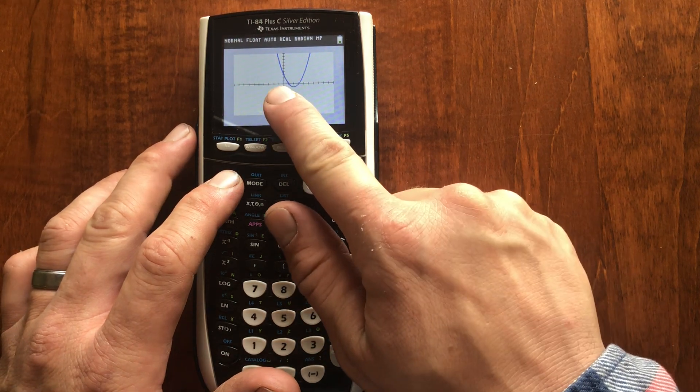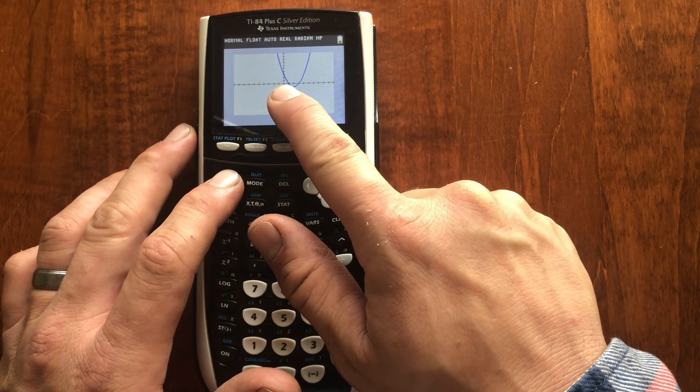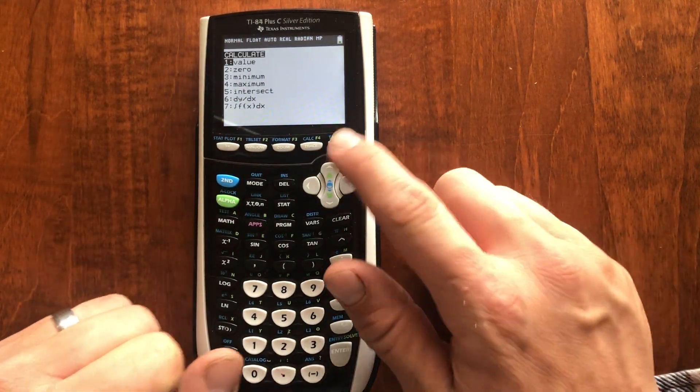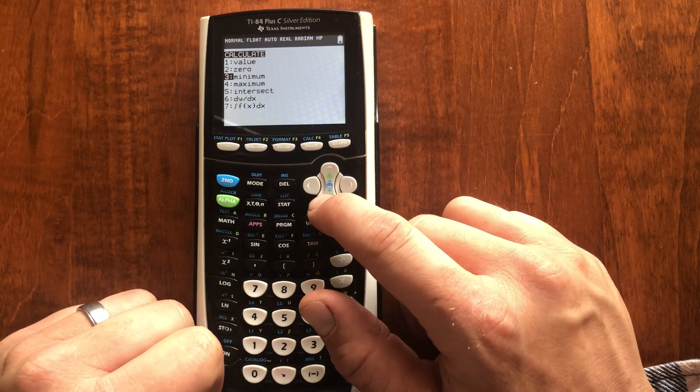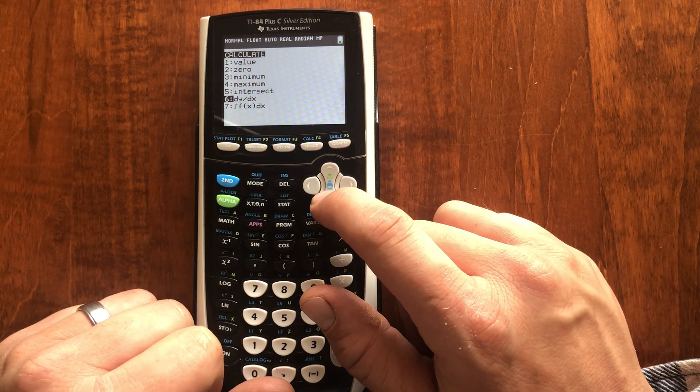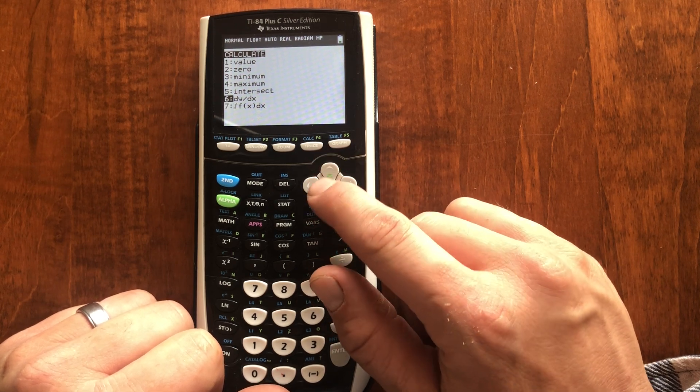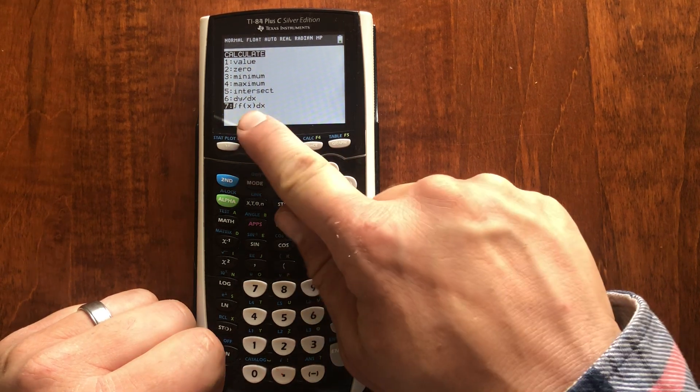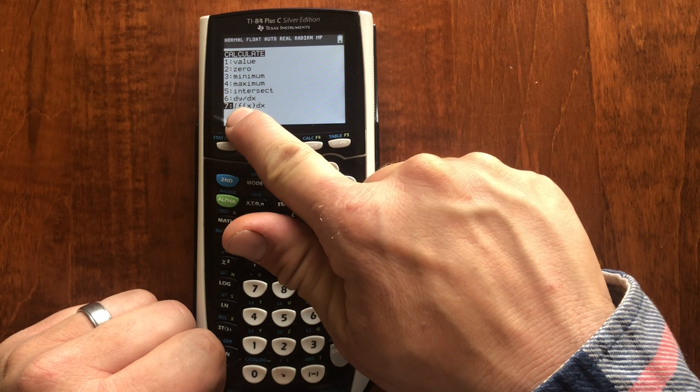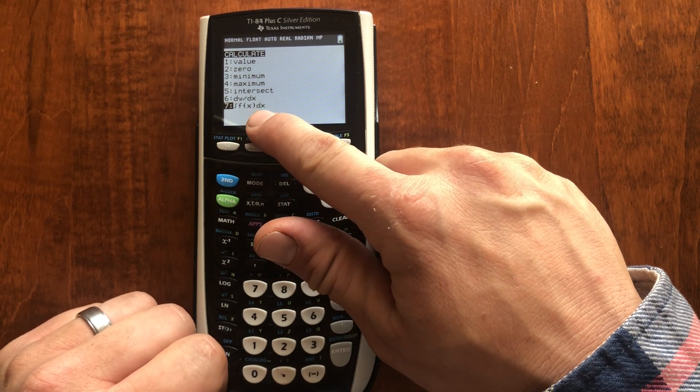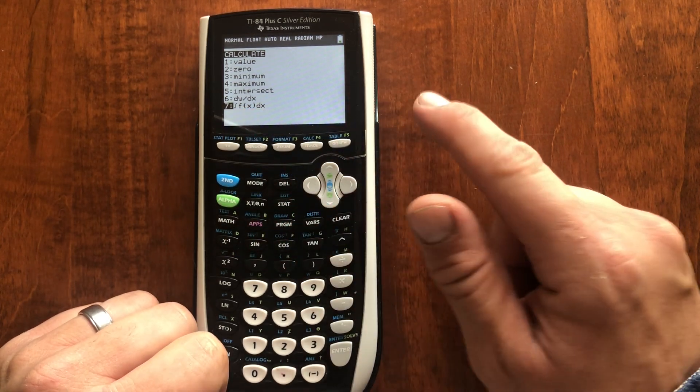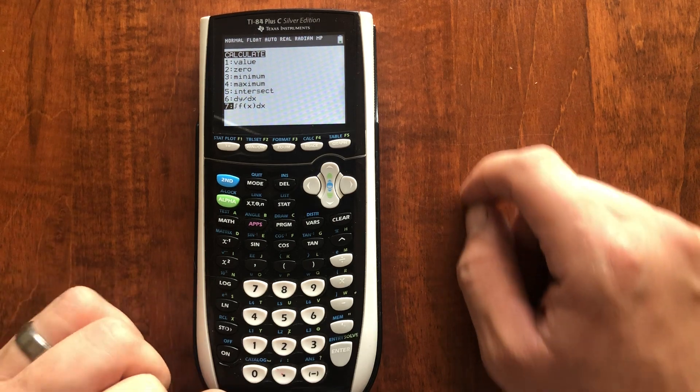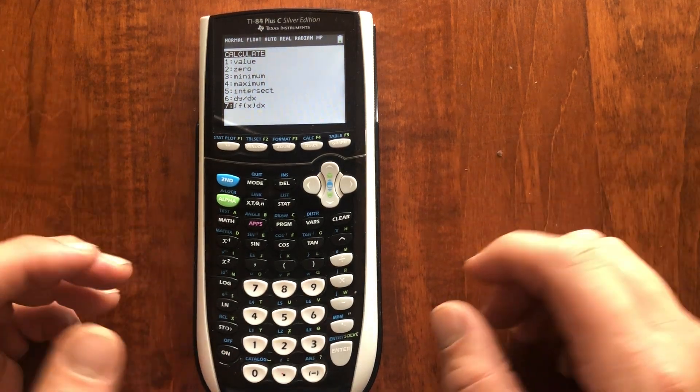We'll go to second. We're going to find the area under the curve starting at the y-axis and going up to that first zero, which looks to be at one. So we'll go second function, calc. We've seen value, zero, minimum, maximum, and intersection before. These next two are calculus operators. The first one is finding the derivative, and the second one is finding the integral. That little s means the sum of a bunch of slices of this function. The heights and widths of those slices are multiplied by one another, which gives you an area.